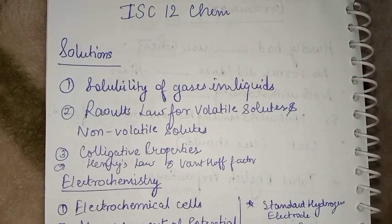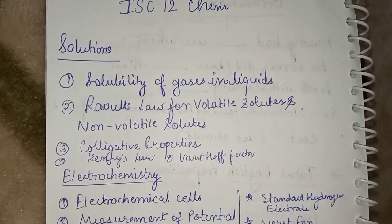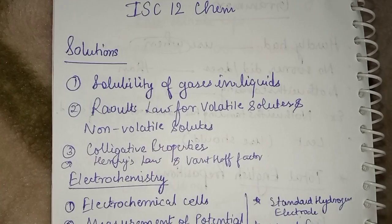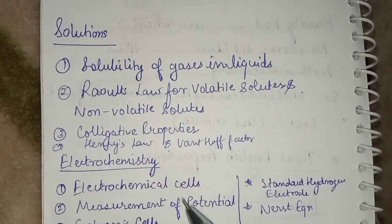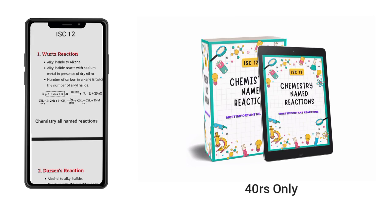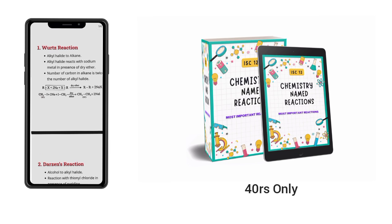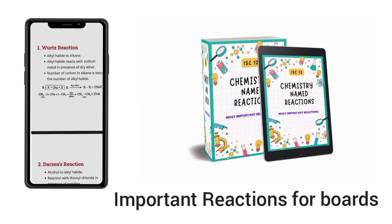Then we have colligative properties. Here the question on van't Hoff factor, degree of dissociation - a numerical is always asked from this chapter of Solutions. Electrochemistry and chemical kinetics - I would like to introduce you to these important name reactions for Chemistry ISC 12.